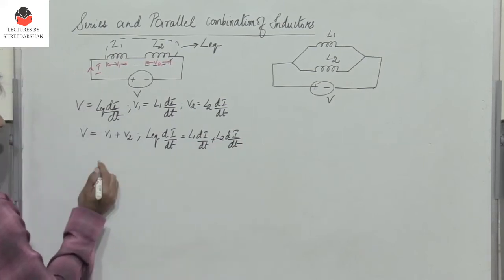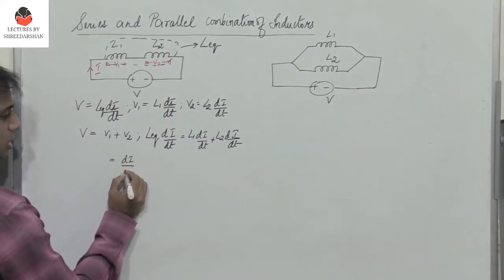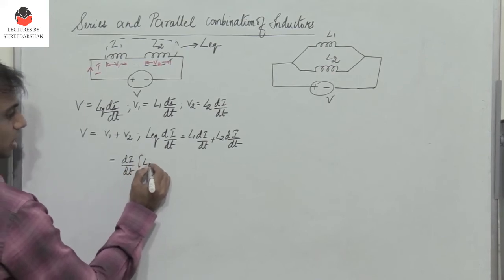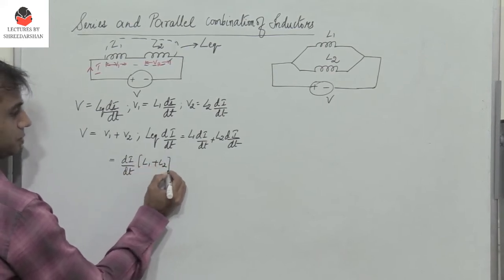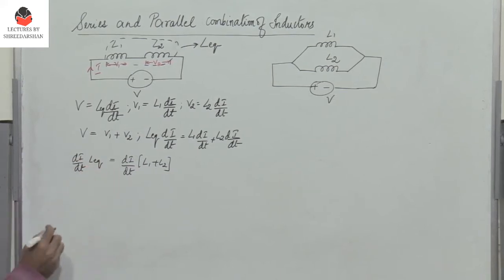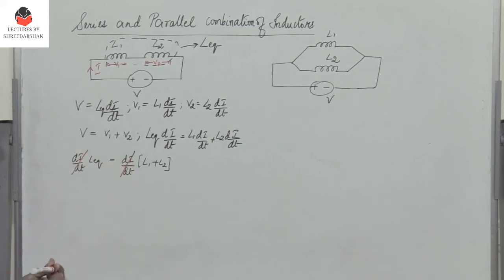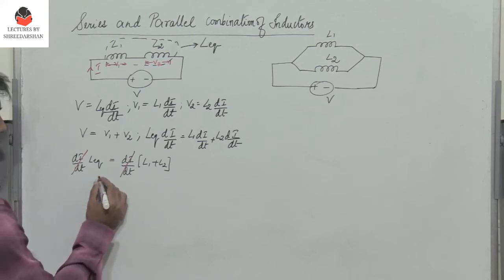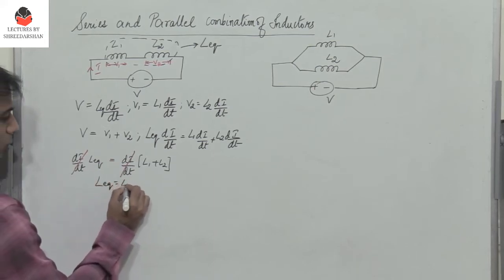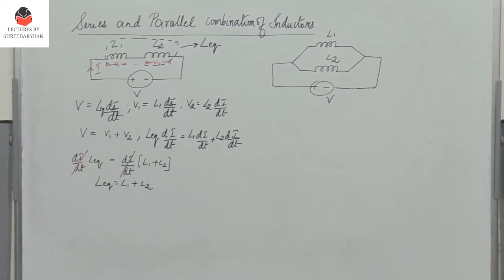We can take dI/dt as a common factor outside, giving us L equivalent times dI/dt equals (L1 plus L2) times dI/dt. We can then cancel dI/dt from both sides, so L equivalent equals L1 plus L2. When inductors are connected in series, the equivalent inductance is the sum of the individual inductances.